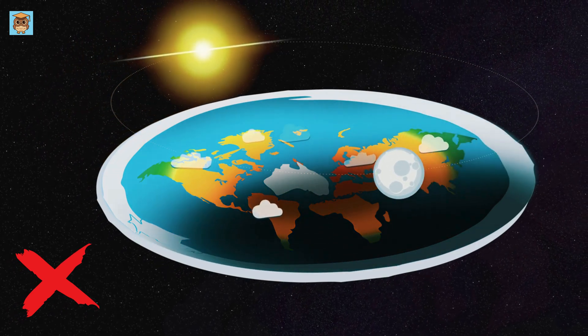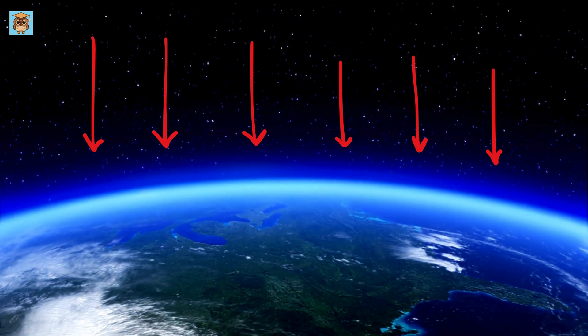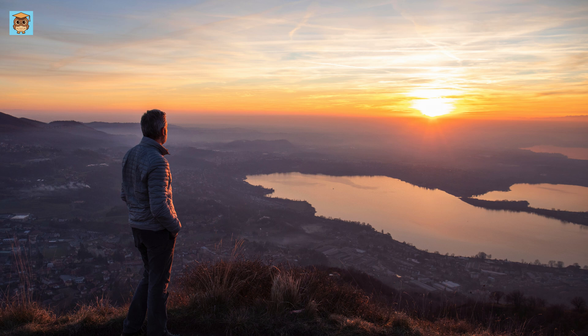Sorry, flat-earthers. So, what you're seeing is actually the curved edge of the Earth, and that's why the horizon appears where it does.